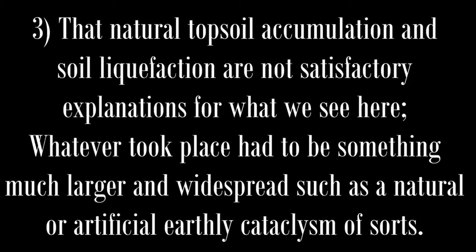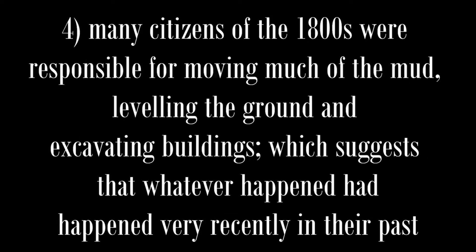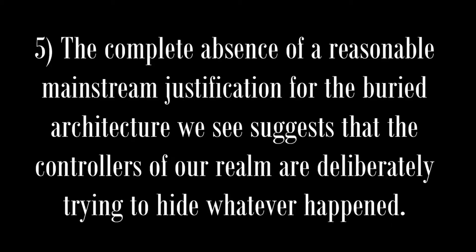The strange case of buried architecture provides the following conclusions: what lies beneath are not the remains of previous civilizations — more often than not, the buried structures are consistent with the architecture we see above ground. The structures are much larger than originally suspected, making them an even greater construction impossibility for a Victorian generation. Whatever took place had to be something much larger and widespread — such as a natural or artificial earthly cataclysm. Many citizens of the 1800s were responsible for moving much of the mud, leveling the ground and excavating buildings, suggesting that whatever happened had occurred very recently in their past. The complete absence of a reasonable mainstream justification suggests the controllers of our realm are deliberately trying to hide whatever happened.